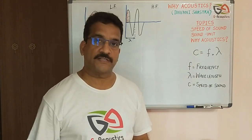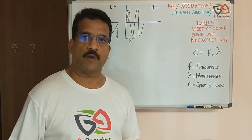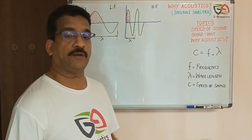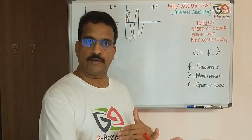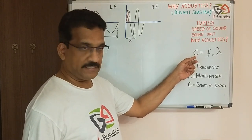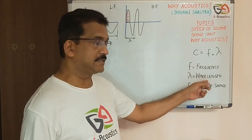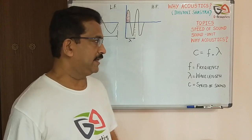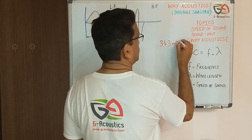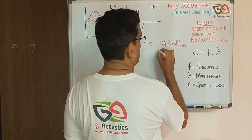Coming to the first topic — speed of sound. When we talk about speed in general life, we talk about the speed of a vehicle: how many kilometers per hour or meters per second. Same way, sound also has a speed. The speed of sound is signified by C, and the formula is C = frequency times wavelength, where F is frequency and lambda is wavelength. The speed of sound is 343 meters per second.